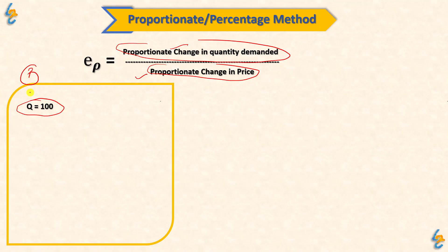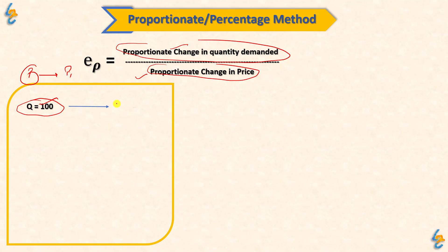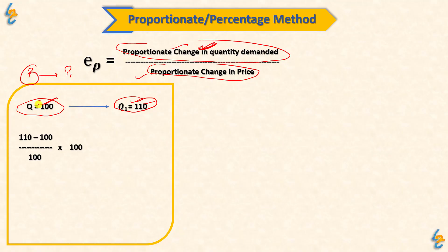If at any price the product quantity is 100 — say price is P — and P has changed to P1, so the quantity has become 110. We need to find the percentage change in quantity. The formula is: final value minus initial value, upon the initial value, multiplied by 100. So we get: (110 − 100) / 100 × 100 = 10 / 100 × 100 = 10%. So there is a 10% change in quantity.